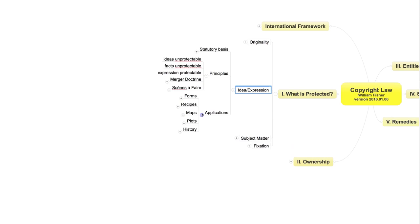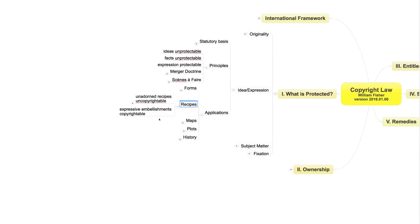Here's a more straightforward application of the same principles. Suppose I write and publish a cookbook, a collection of recipes of a particular sort. Suppose further that I created some of those recipes myself. You copy some of my recipes and include them in your own cookbook. Have you engaged in copyright infringement? If the recipes that you copied contain nothing more than descriptions of ingredients, quantities, ways of combining things, cooking times, and so forth — in other words, instructions for creating the dishes in question — then the answer is no. The reason is that unadorned recipes are said to be ideas or methods of operation and thus not subject to copyright protection.